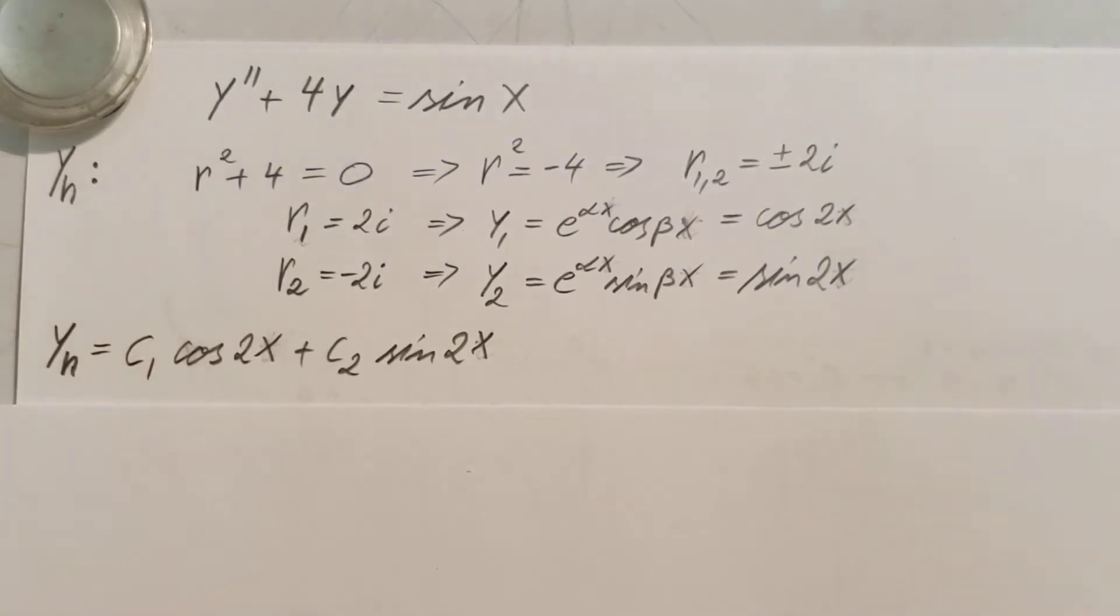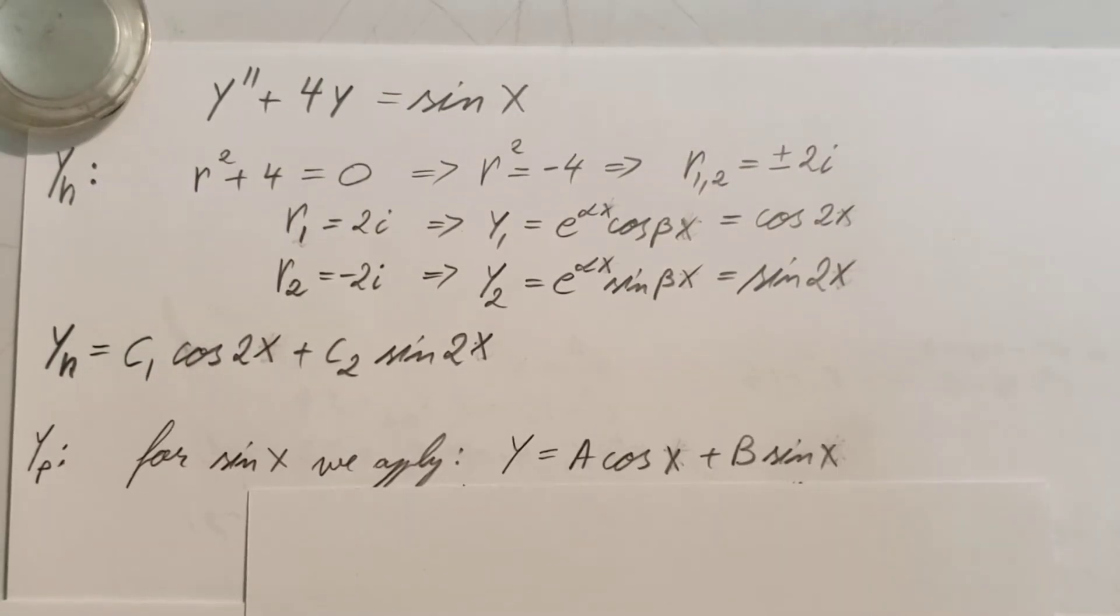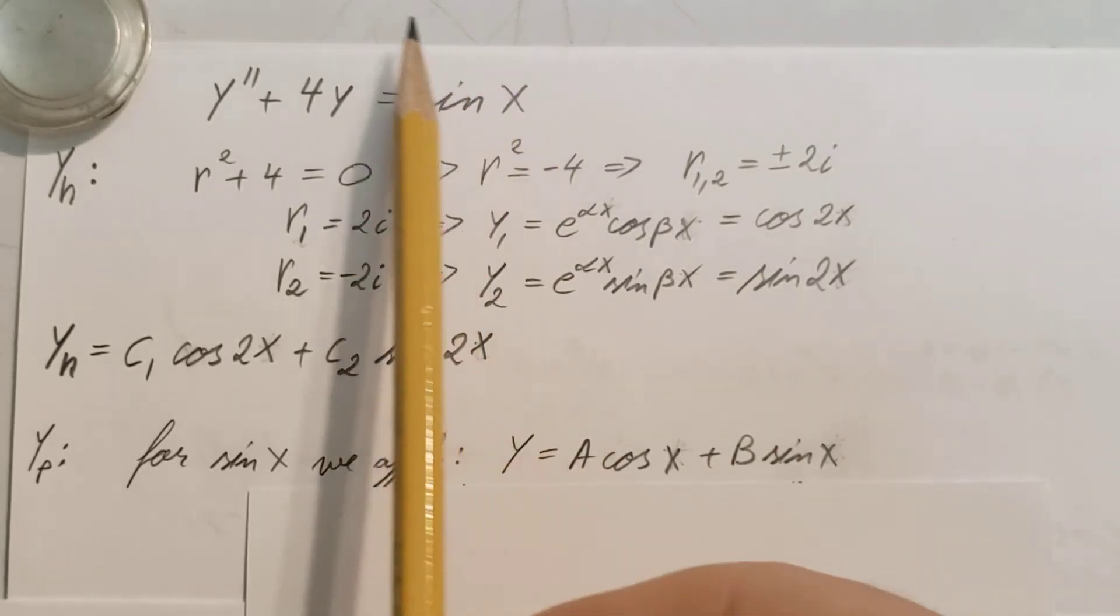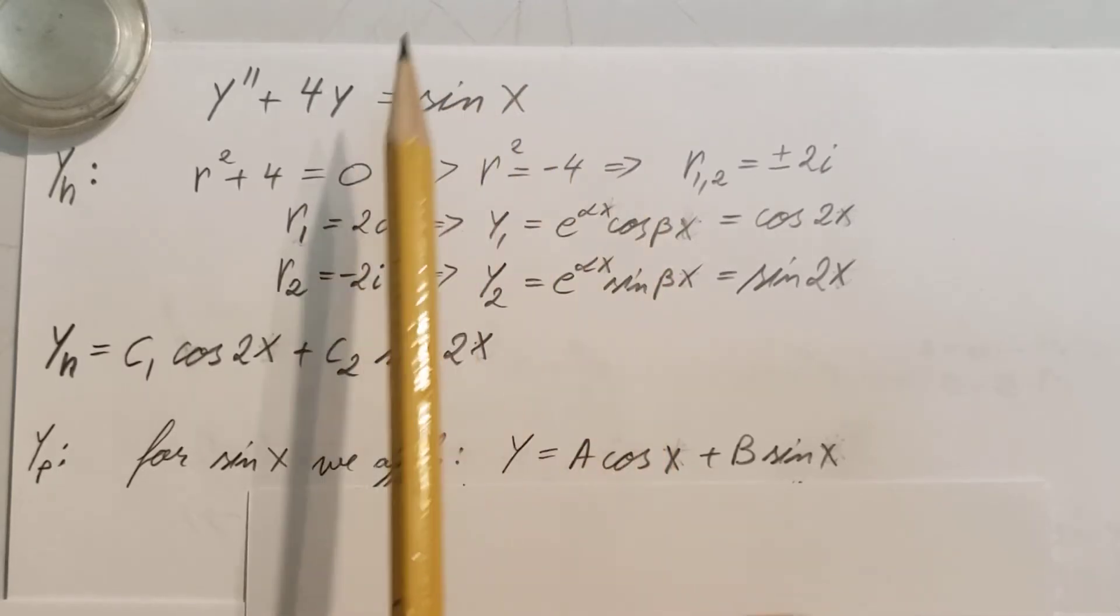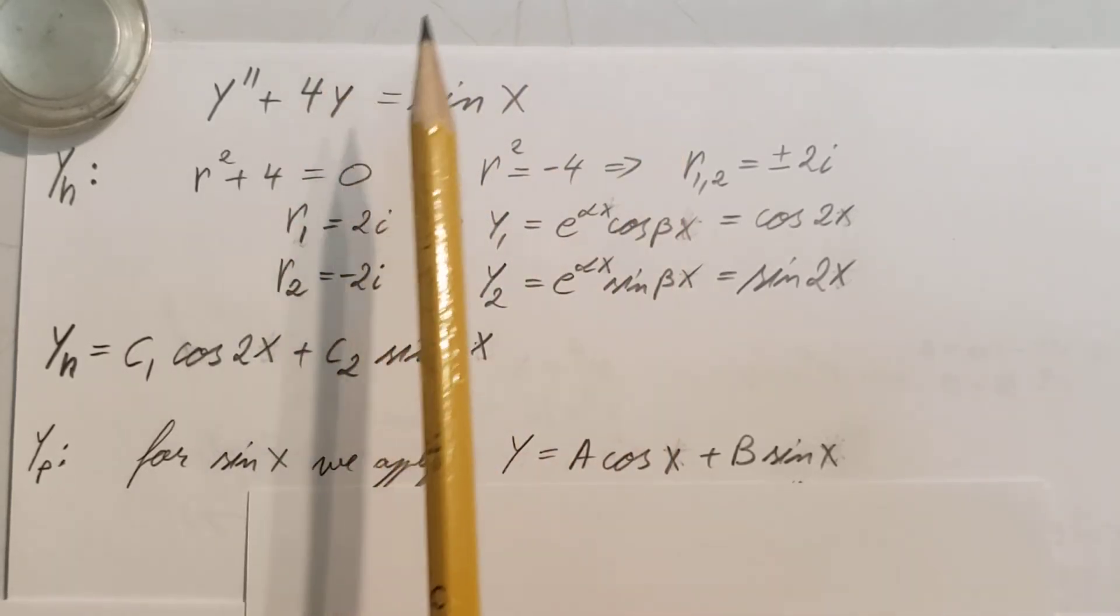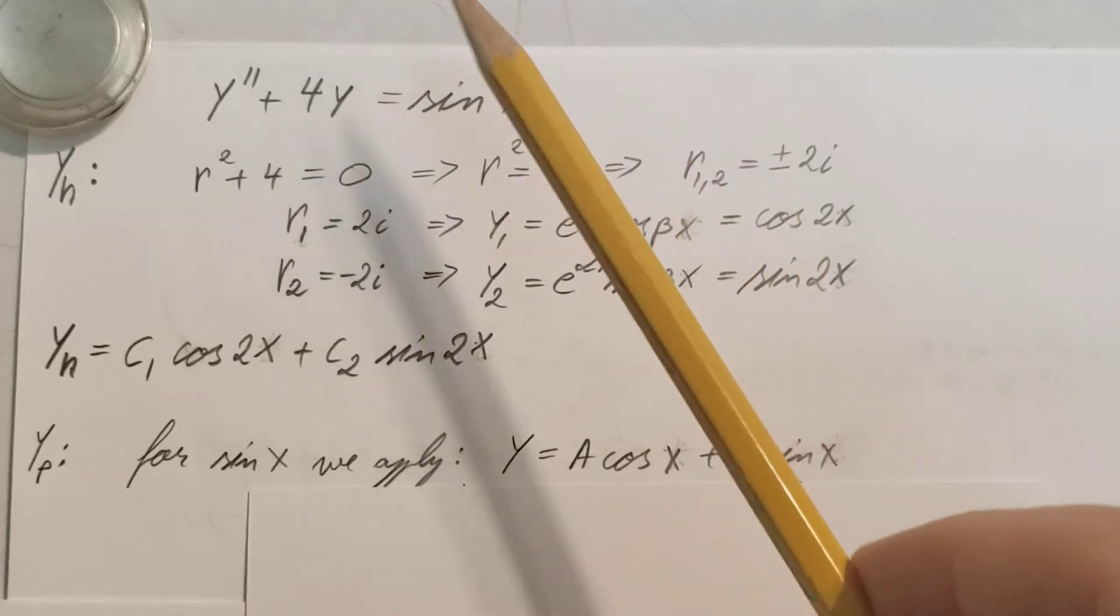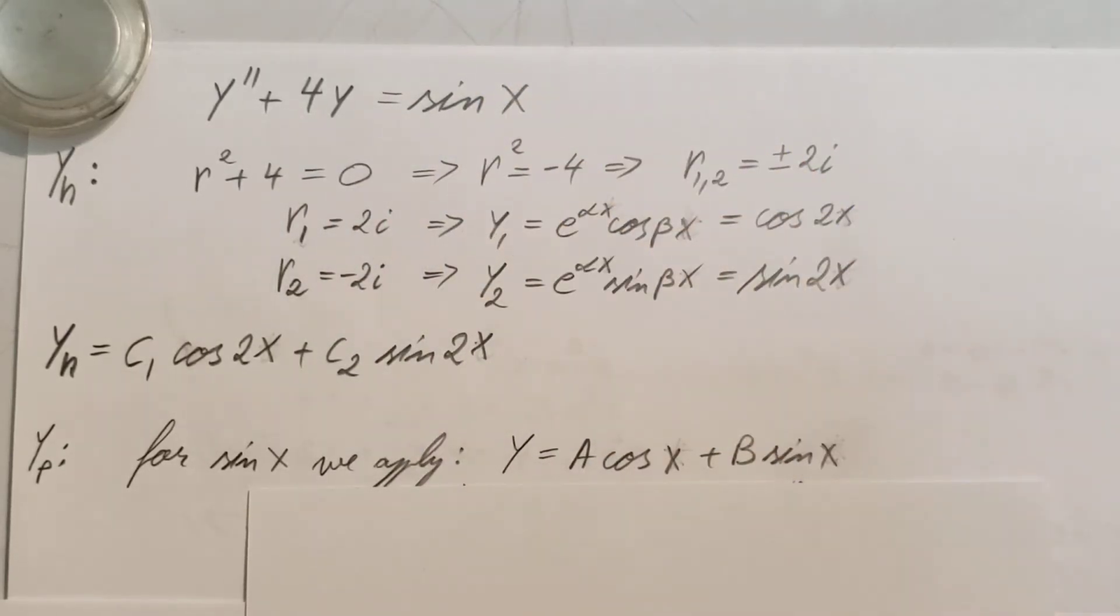Now next step, the particular solution. When we have on the right-hand side some kind of function that's a nice polynomial, e to some power, or sine, cosine, something, then it is good to use the undetermined coefficient method. That's what we're gonna use. Since we have sin x, we're gonna assume for the right-hand side a function of y = A cos x + B sin x.